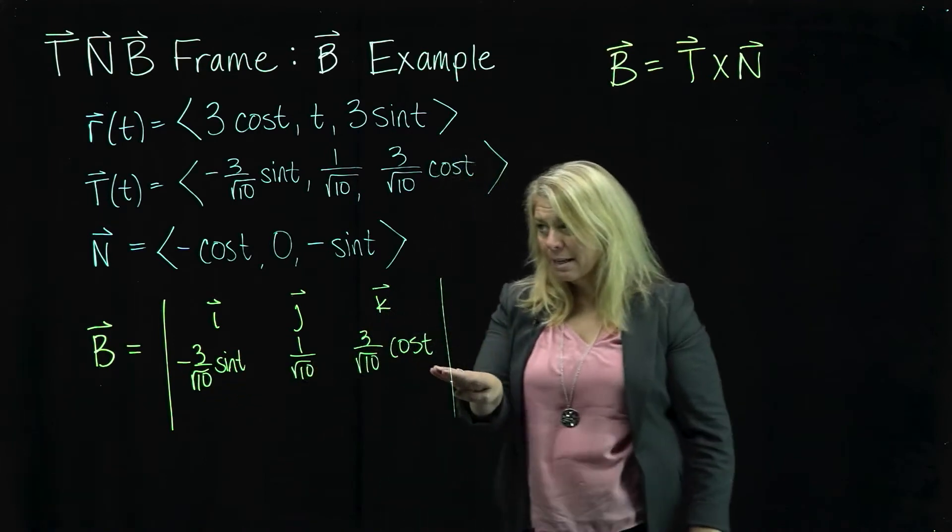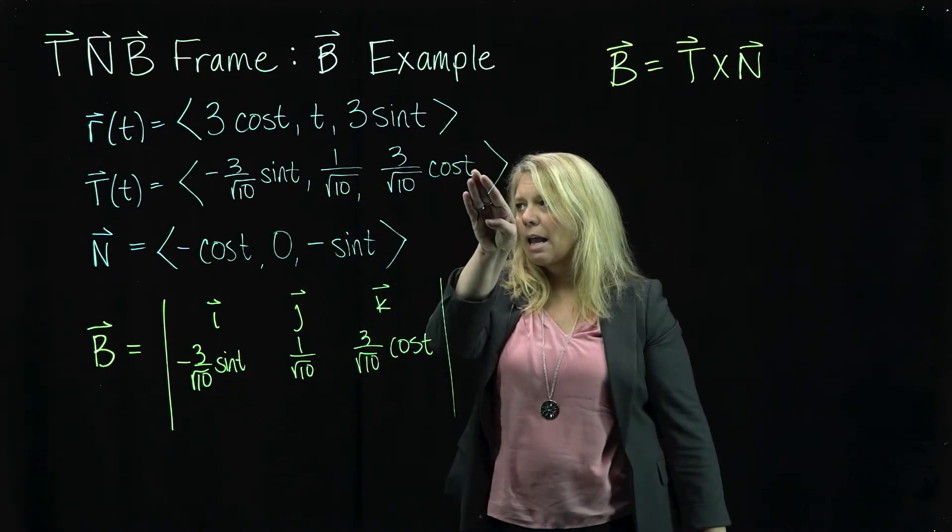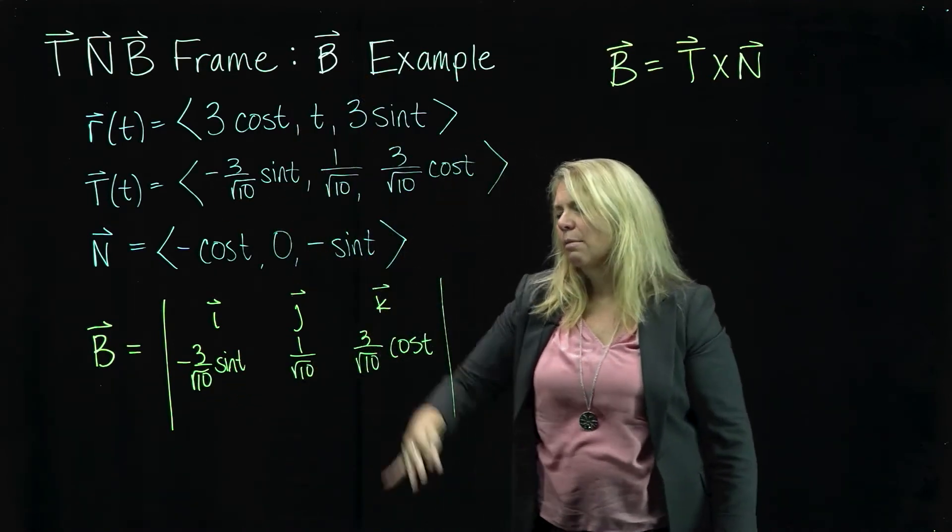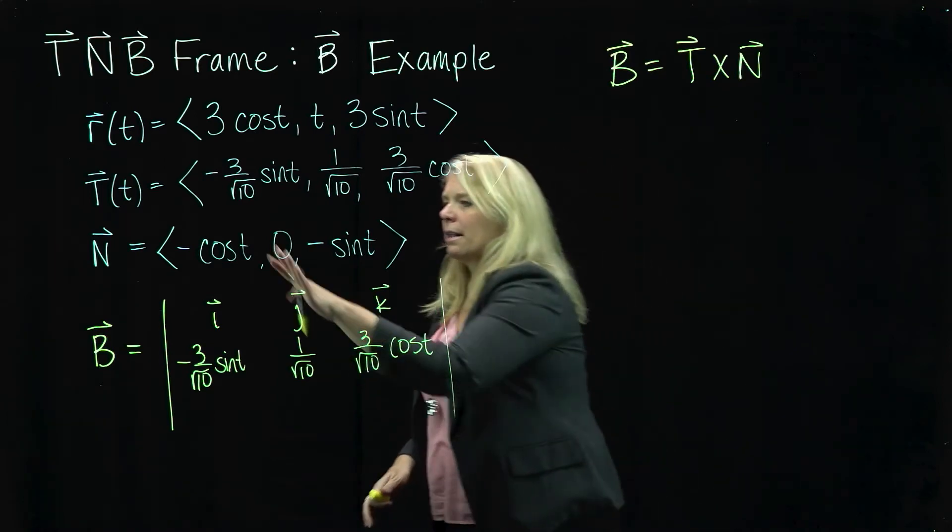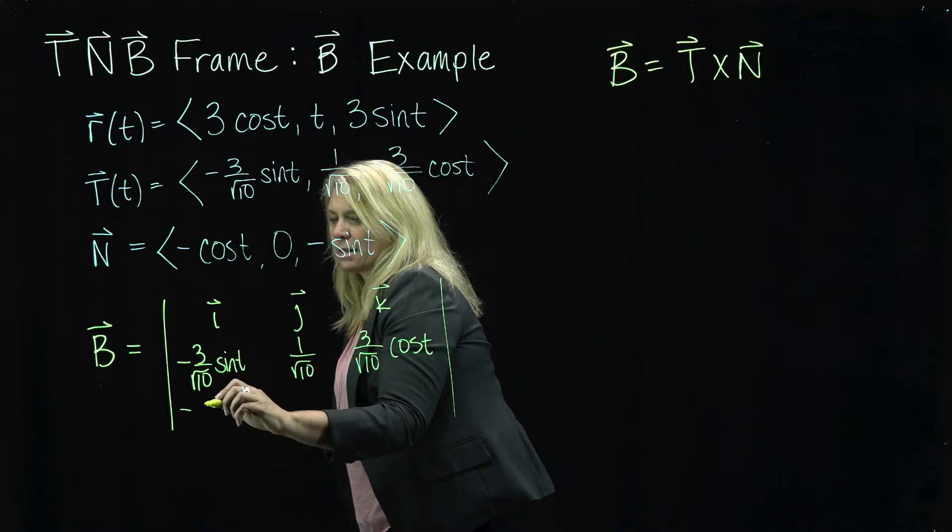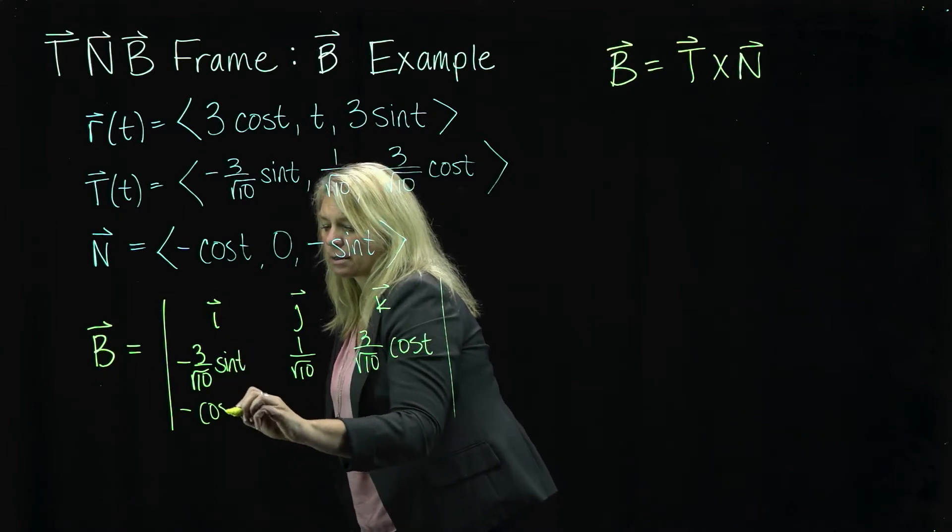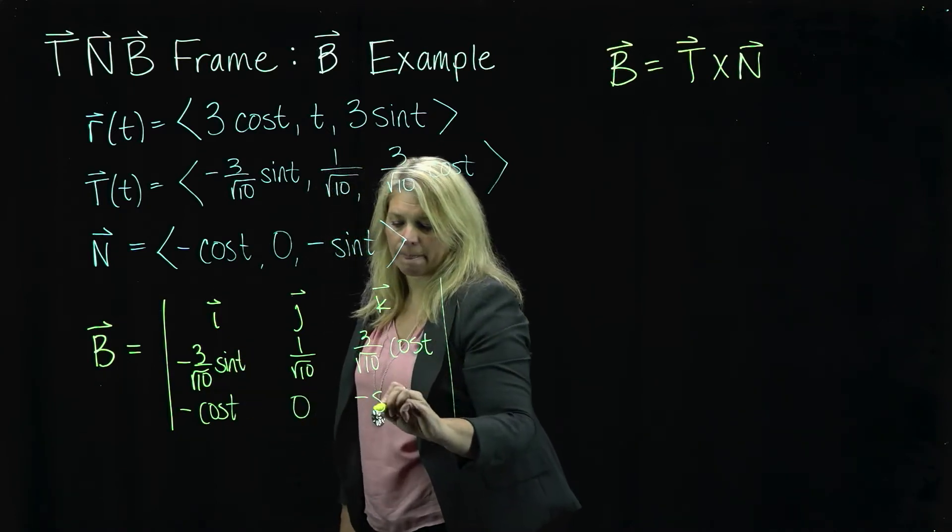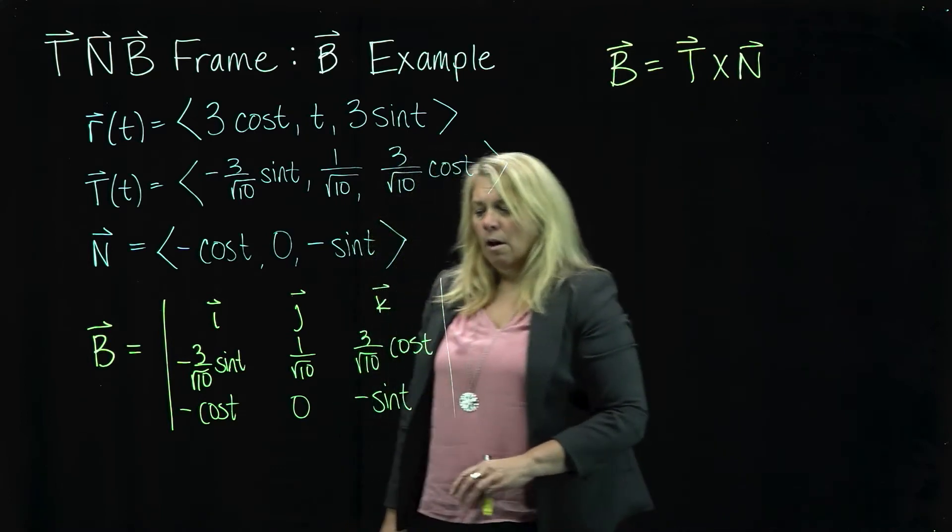All right. So these are the components of my T vector. Right. Again, make sure you're grabbing the right vector. Labeling all your work helps with that. And then I need the components of my N vector. And if you have these in the wrong order, remember that's going to mess up the signs on your cross product.